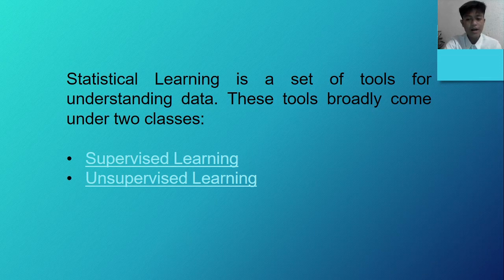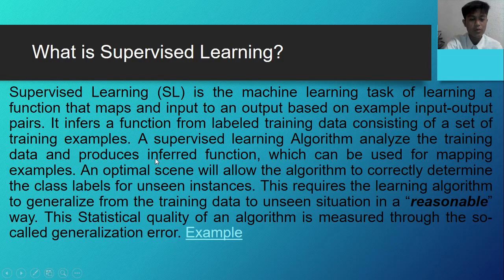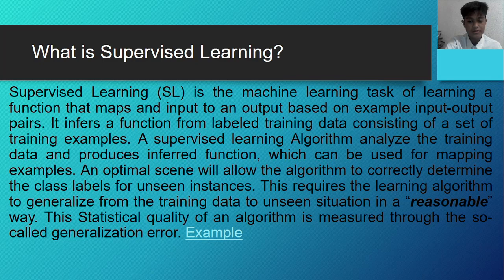These tools broadly come under two classes: supervised learning and unsupervised learning. So what is supervised learning? Supervised learning, or SL, is the machine learning task of learning a function that maps inputs to an output based on example input-output pairs. It infers a function from labeled training data consisting of a set of training samples. Supervised learning algorithms analyze the training data and produce an inferred function which can be used for mapping examples. An optimal scenario will allow the algorithm to correctly determine the class labels for unseen instances. This requires the learning algorithms to generalize from the training data to unseen situations in a reasonable way. This statistical quality of an algorithm is measured through the so-called generalization error.